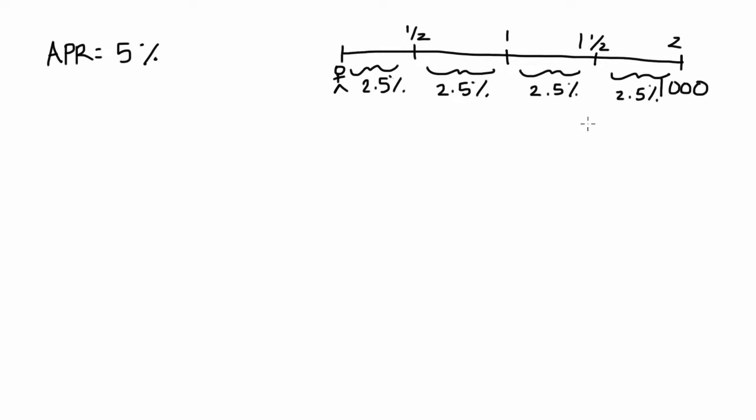So in our timeline every six month period has an interest rate of 2.5%. So in order to discount appropriately this $1,000 cash flow, which will be the price of the bond.